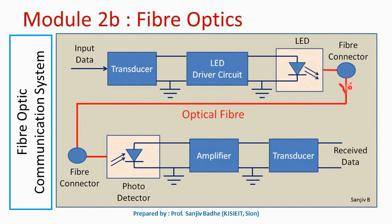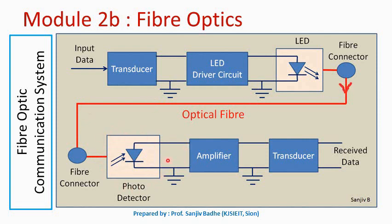This optical signal is fed to the optical fiber. The signal travels through the optical fiber and arrives at the other end. At the other end, this optical signal is converted back into an electrical signal by using a photodetector — a photo diode. This photo diode converts the optical signal into an analogous electrical signal.